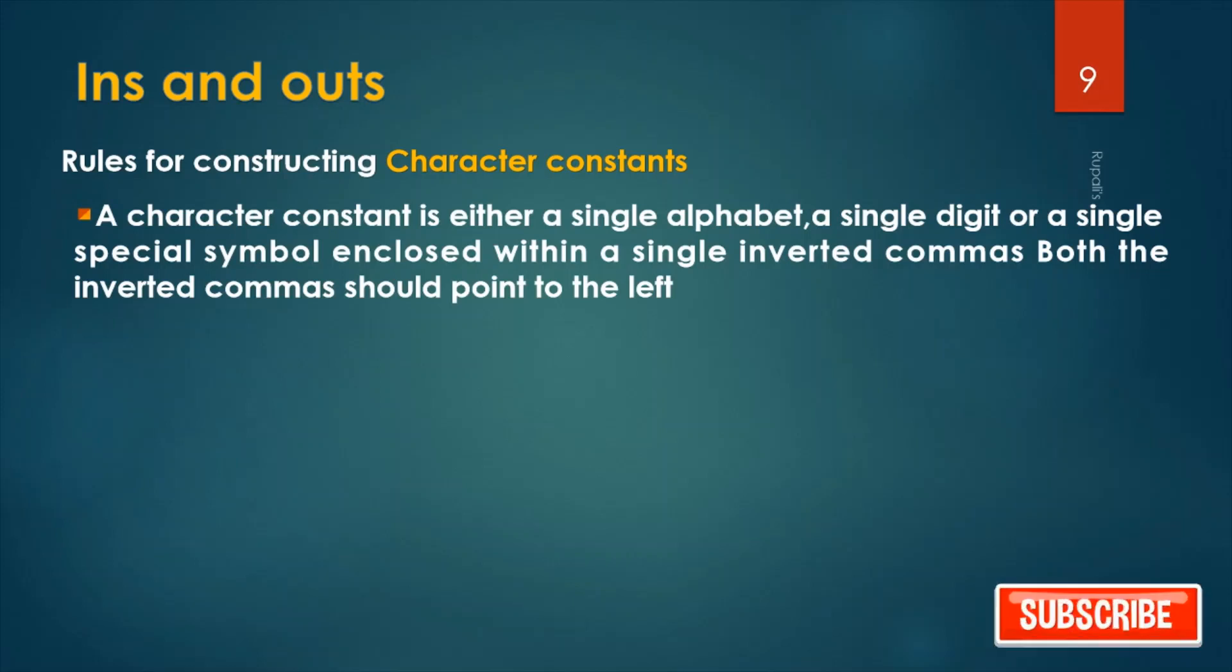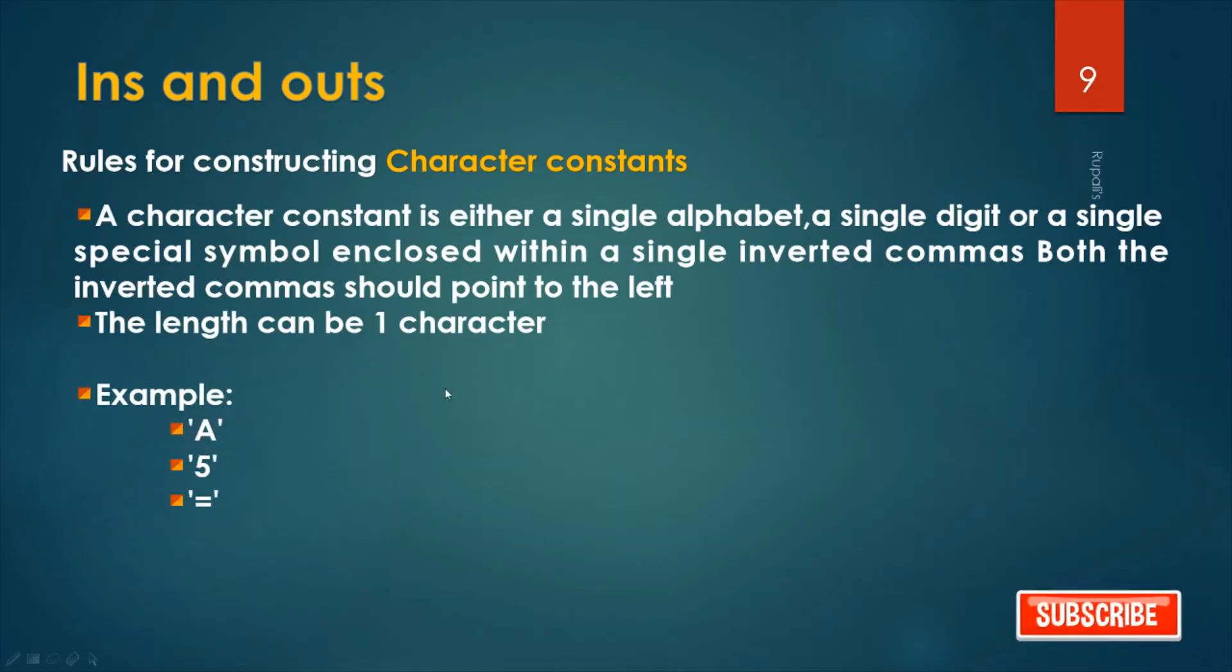Character constants must be enclosed within single inverted commas. Remember, both the inverted commas should point to the left. The length can be one character always. Examples: 'a', 'A', '5', 'c', '=' etc.